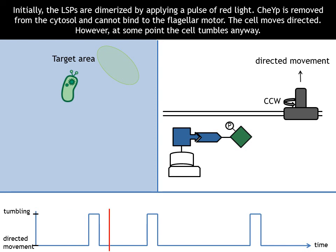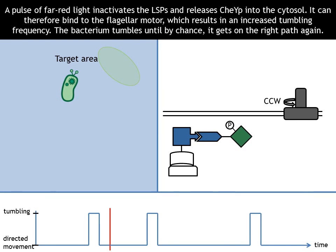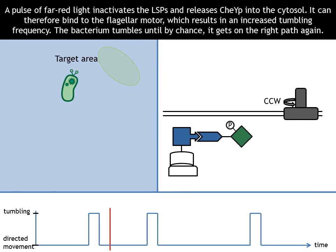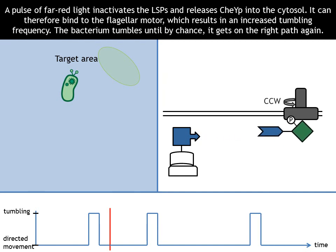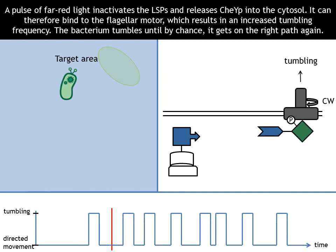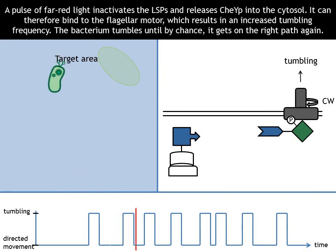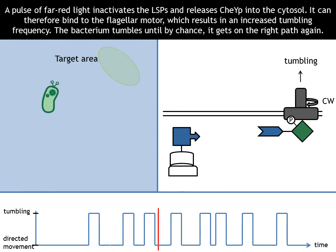However, at some point the cell tumbles anyway. A pulse of far-red light inactivates the light-sensitive proteins and releases CheYP into the cytosol. It can therefore bind to the flagellar motor, which results in an increased tumbling frequency.